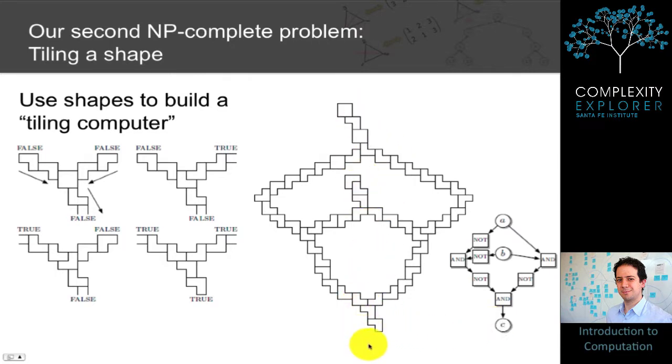So remember, if we can tile this, then the output here is covered by a single L-shape. And we said on the output, we consider a single L-shape true. So if we can tile this entire shape, it's the same as saying there are some inputs A and B that make the output of this circuit, C, true.